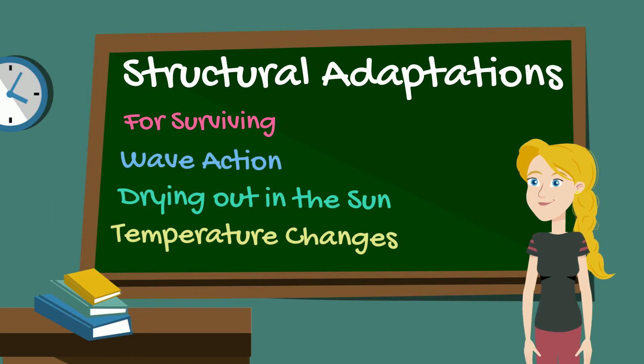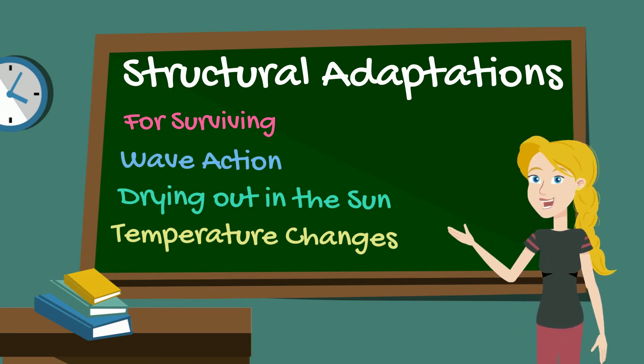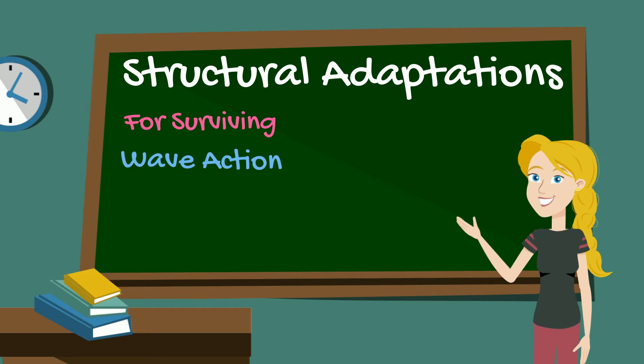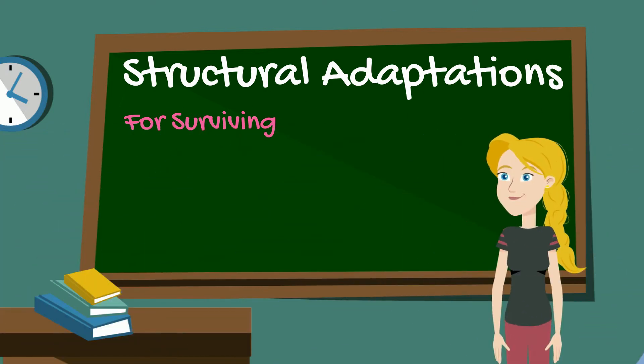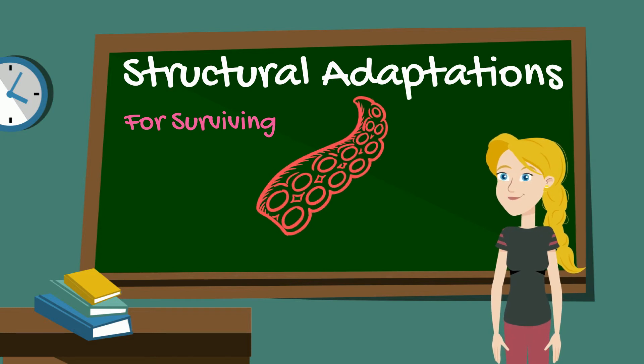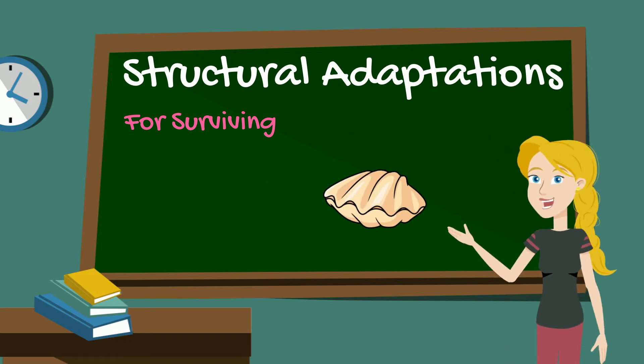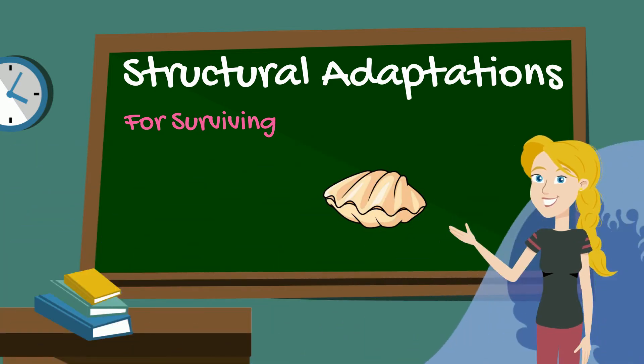Now let's talk about the different structural adaptations that we see in the intertidal zone and how they help creatures survive these challenges. Many creatures have structural adaptations that help them avoid being washed away by the breaking waves. Sea stars have thousands of suctioning tube feet that anchor it to rocks and other surfaces. Clams and mussels have smooth, more flat shells designed to let the water flow right over them to reduce the force of the waves.